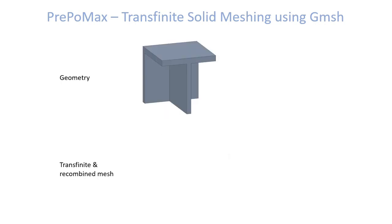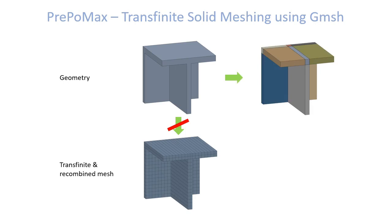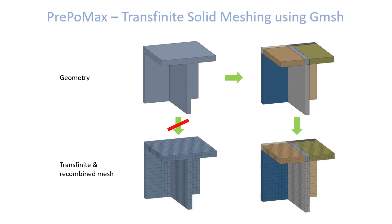The next question is how to mesh a more complex geometry and get a transfinite and recombined mesh. Unfortunately this cannot be done directly, so we have to do some preprocessing and first split the geometry into simpler volumes. The volumes must have five or six sides, as shown in the figure. In PrePoMax we can then create a compound part in order to get a conforming mesh, and if needed we can merge different parts into a single mesh part.